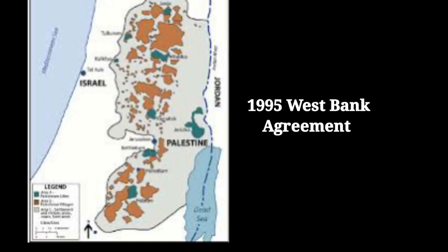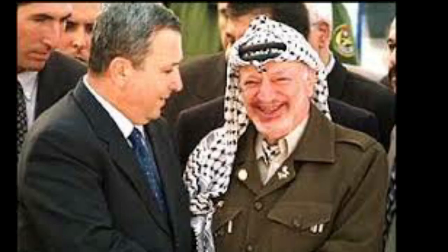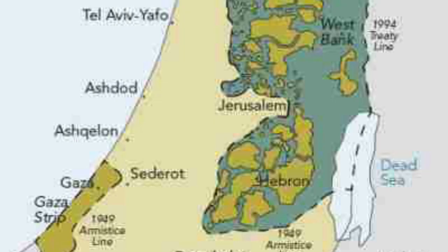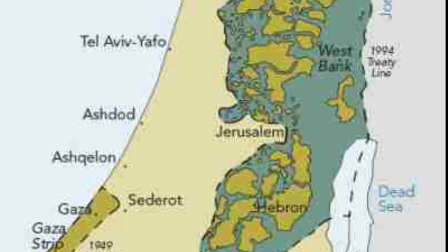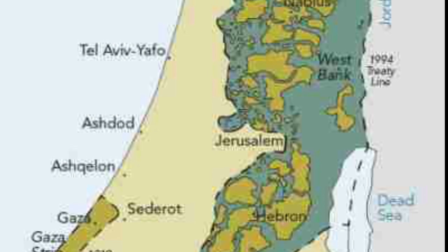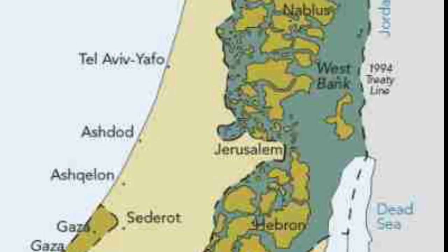The following year, 1995, there was another agreement whereby the West Bank was subdivided into various areas under Israeli and Palestinian control. Then, three years later, in 1998, it was hoped to give permanent status to these arrangements. However, these talks broke down, mainly over disputes about borders.